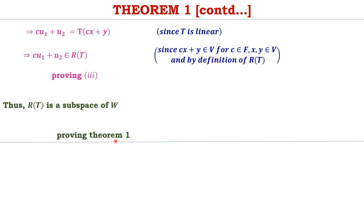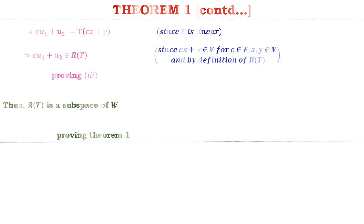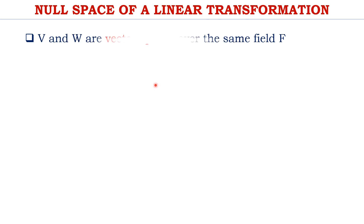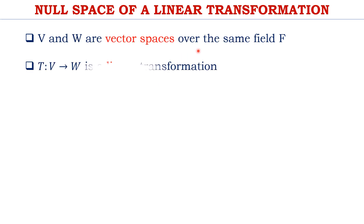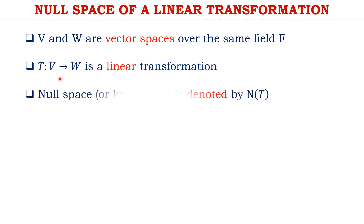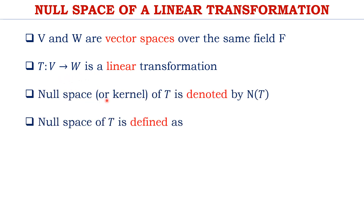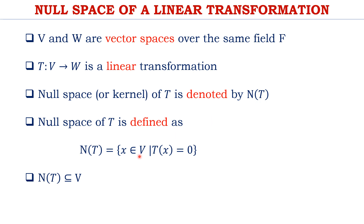Let us now define the null space of a linear transformation. Again, assume two vector spaces V and W defined over the same field, with a linear transformation T from V to W. The null space of T, also called the kernel of T, is denoted N(T) and is defined as those elements of the domain V which satisfy T of X equal to 0 — that is, elements of V mapped to the zero element of W. Thus N(T) is a subset of V.